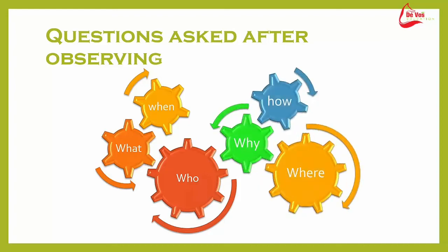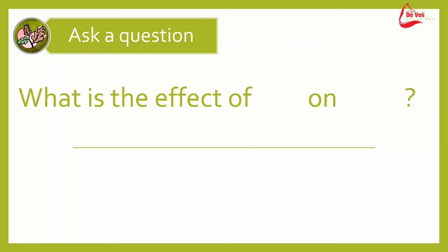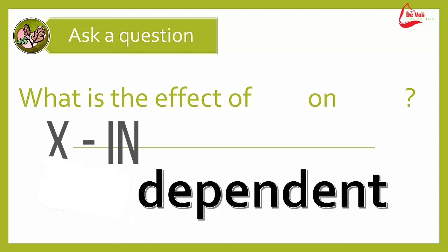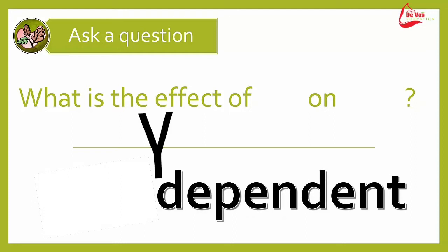Who else saw what I saw? What is happening here? When does this action take place? Where does this action take place? Why is this happening and how is this happening? After we have researched in a library or online, we can now ask a question: what is the effect of X on Y? Where X would represent our dependent variable and Y would represent our independent variable.